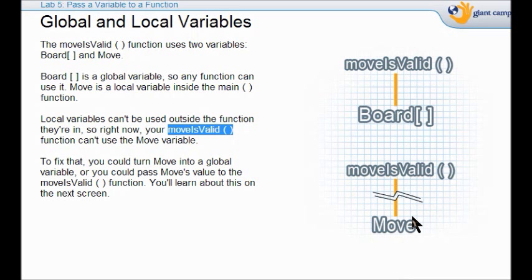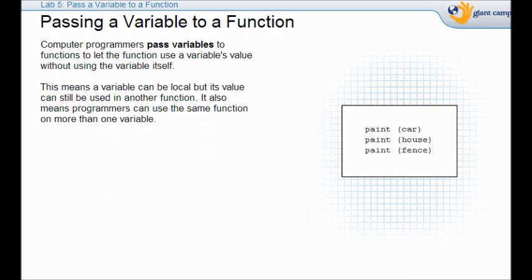So our move is valid function cannot use the move function. It cannot use this because it's declared inside the main function. So to fix that, there's two ways we could do it. We could make move into a global variable. Or we could pass move's value to the move is valid function. So we don't have to make it a global variable to use it inside the move is valid function. We just have to pass it on. So this is really pretty slick. We can pass a variable's value to a function without using the variable itself. So you can have a local variable, but you can pass its value to another function. So you see, programmers can use the same function on more than one variable.